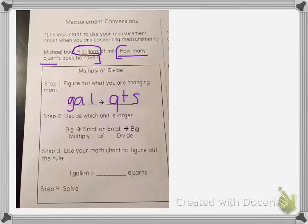So we're going from gallons to quarts. Here's where it's different. Our step two is to decide which unit is larger. So we have to figure out are we changing from a big unit to smaller or smaller to bigger.